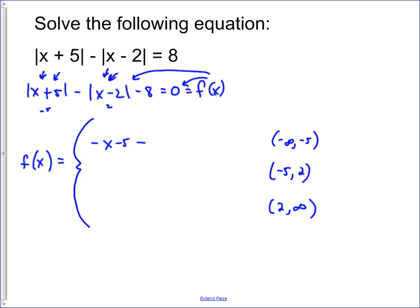And then we also take the opposite of x minus two because it's negative in that region. And so it's going to be negative x plus two. And then the negative eight is not an absolute value, so it just is placed as it appears in the function. So that is a representation of this function for that portion or that region.